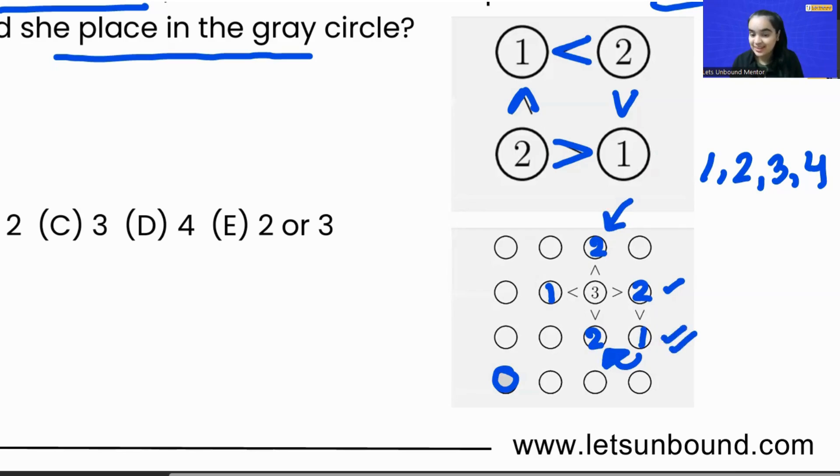And 2 cannot occur in the same column twice. So that means we cannot put 2 at the top, correct, because 2 will have to come over here because 1 we have already fixed in this place, right?